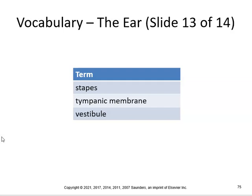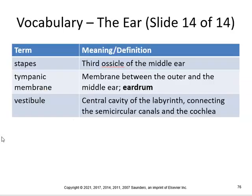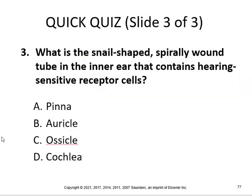The stapes is the third ossicle of the middle ear. The tympanic membrane is the membrane between the outer and the middle ear. The vestibule is the central cavity of the labyrinth connecting the semicircular canals and the cochlea.